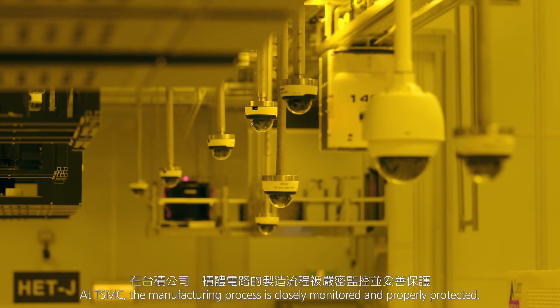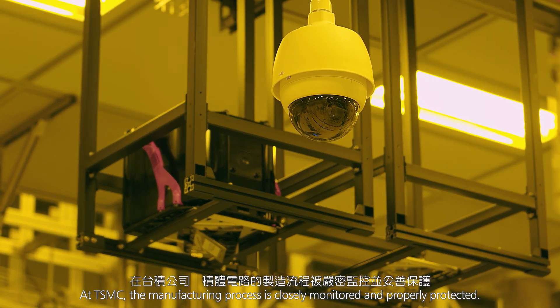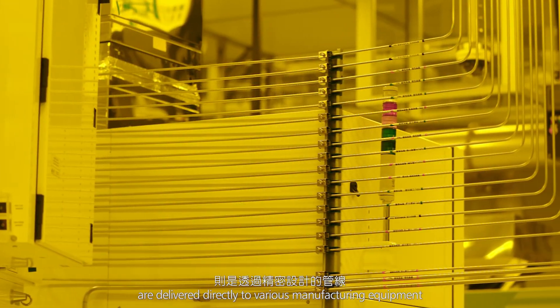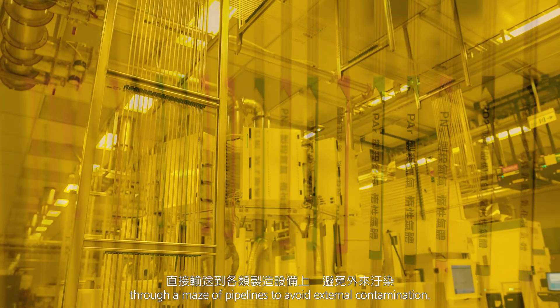At TSMC, the manufacturing process is closely monitored and properly protected. Raw materials, such as liquids and gases, are delivered directly to various manufacturing equipment through a maze of pipelines to avoid external contamination.